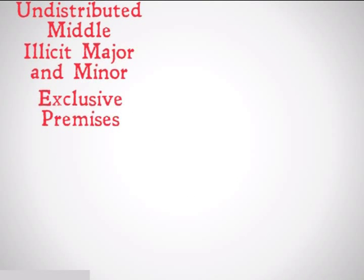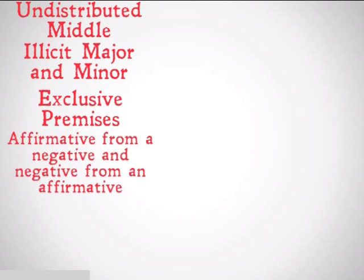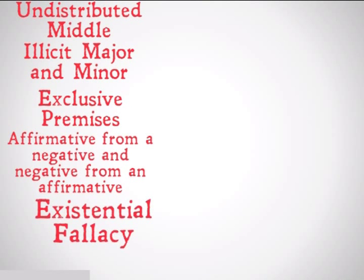That was the exclusive premises fallacy — the fallacy for rule number three. Next up, we'll be looking at the double fallacy: affirmative from a negative and negative from an affirmative, which is the fallacy for rule number four. We will also be revisiting for a third time the existential fallacy as it applies to categorical syllogisms and how it is a fallacy for rule number five.